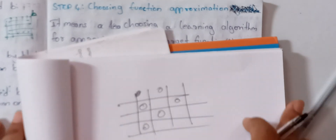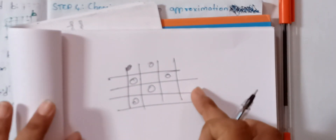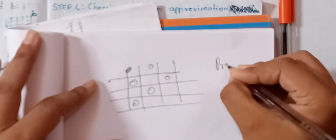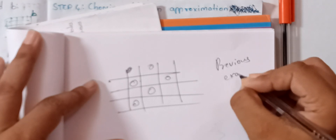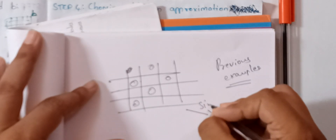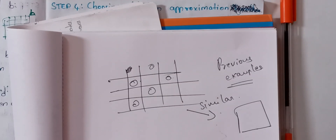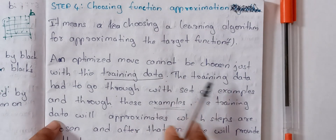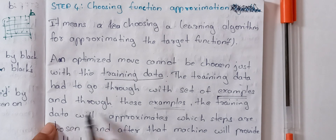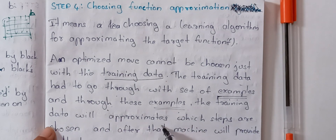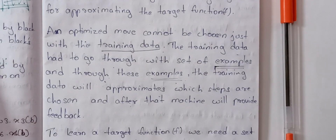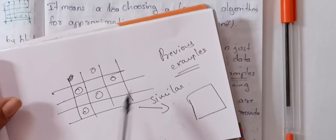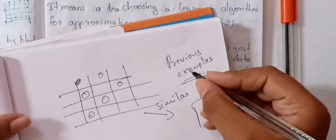The machine learning algorithm uses previous examples — you can choose similar examples from previous board states. The training data goes through a set of examples, and through these examples the training data will approximate which steps are chosen, and after that the machine will provide feedback.